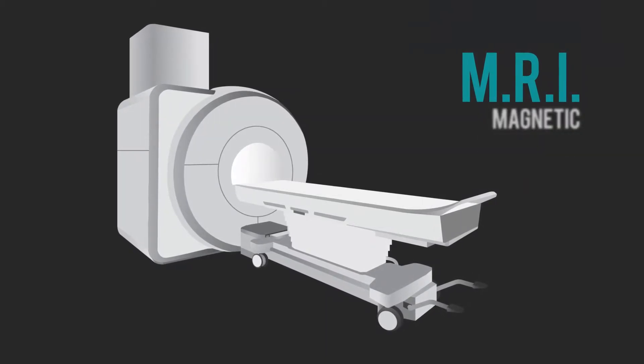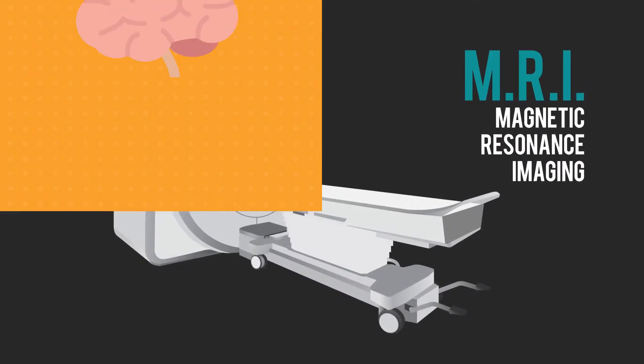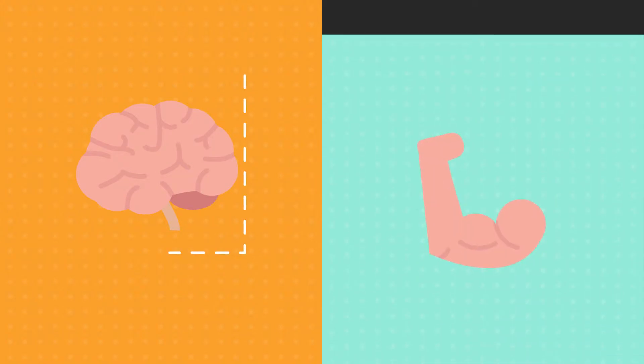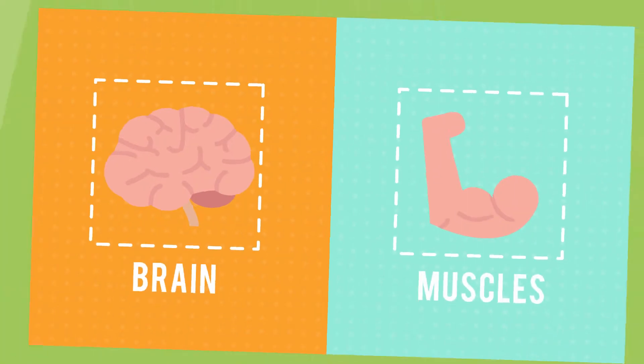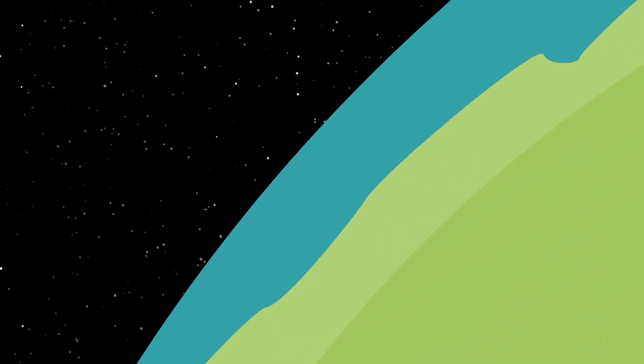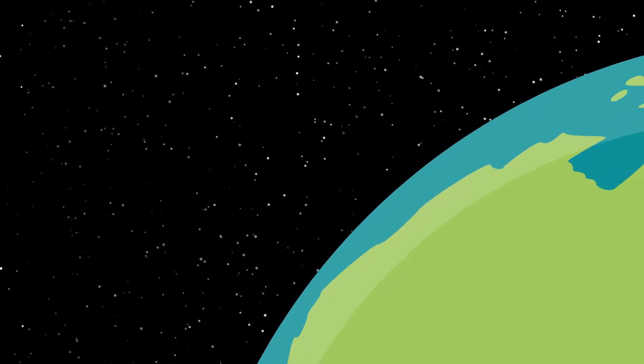MRI stands for Magnetic Resonance Imaging. It takes cool pictures of your insides, like your brain and muscles, using a huge magnet that's 60,000 times stronger than the Earth's magnetic field.